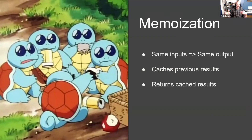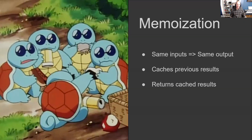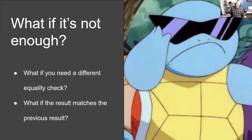So do these inputs triple-equal these inputs? If they don't, it runs the function; if they do, it returns the last computed result. But what if a strict equality check isn't what you need — what if you need to check something more deeply, or check a property? Selectors have some additional functionality on top of memoization.